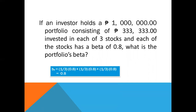The portfolio's beta would be: 1/3 × 0.8 + 1/3 × 0.8 + 1/3 × 0.8. Each stock receives a weight of one-third because there are three stocks, each representing 333,333 pesos of the 1 million peso total investment. So the portfolio beta is 0.8.